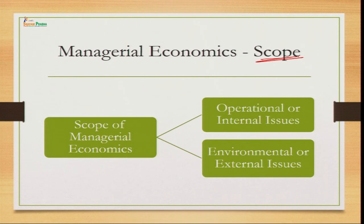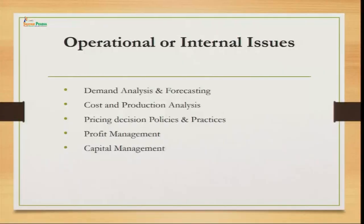Now let us move to the scope of managerial economics. Scope means the area that comes under the preview of the subject — what all we are going to cover under managerial economics. We have classified the scope into two categories: initially we will talk about operational or internal issues which are internal to the organization, and then further we have environmental or external issues which are outside the organization but also come under the scope of managerial economics.